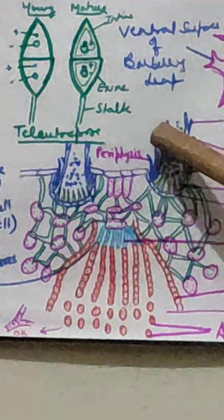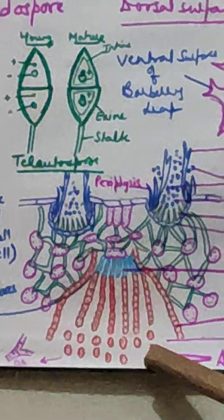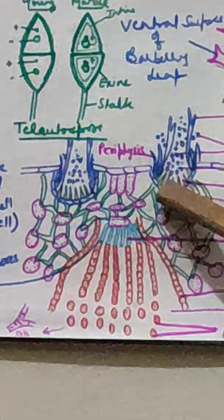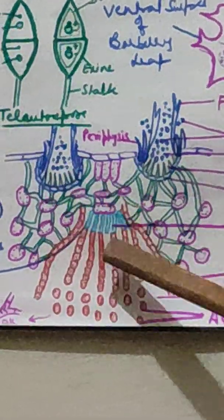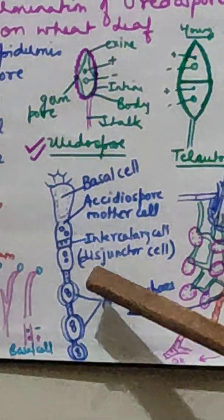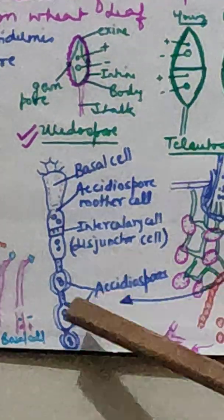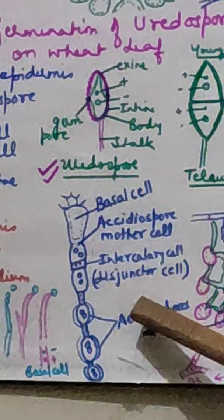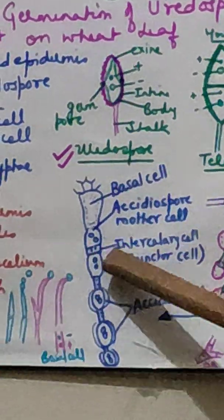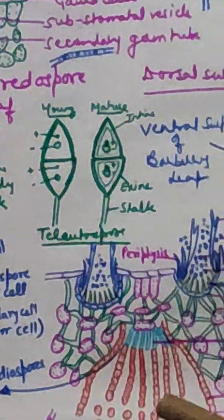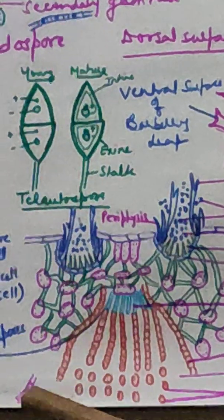When the pycnidium is forming on the upper side, a bell-shaped or cup-shaped structure — the aecial cup — is also formed on the lower side. Here, monokaryotic mycelium accumulates, but due to dikariotization, the nucleus undergoes the dikariotization process, forming the aeciospore mother cell on the lower surface. This aeciospore mother cell divides to give rise to two cells: one is the aeciospore and the other is the intercalary or disjunctor cell. A row of aeciospores is formed with disjunctor cells between each pair — these disjunctor cells are sterile and function to separate aeciospores in later stages.